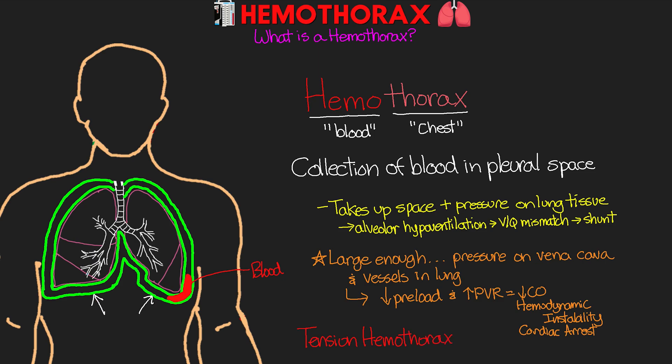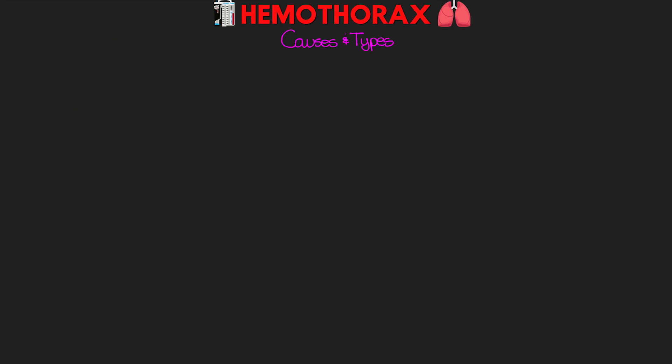Each hemithorax can also hold more than 1500 mLs of blood, so bleeding here can really lead to significant blood loss and potentially ultimately hypovolemic or hemorrhagic shock. Let's talk about some of the causes and the ways that we classify them.